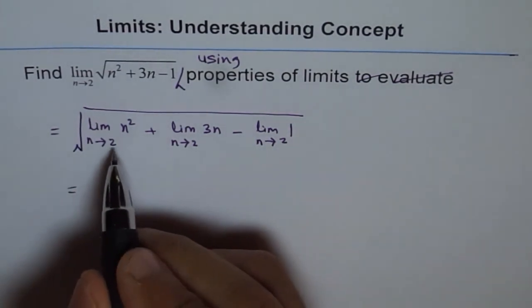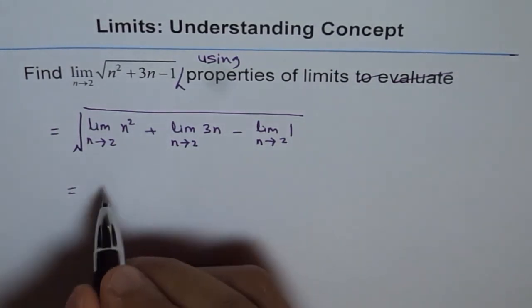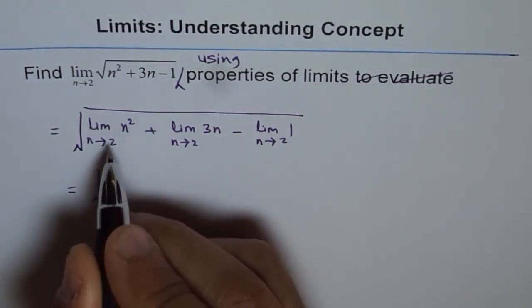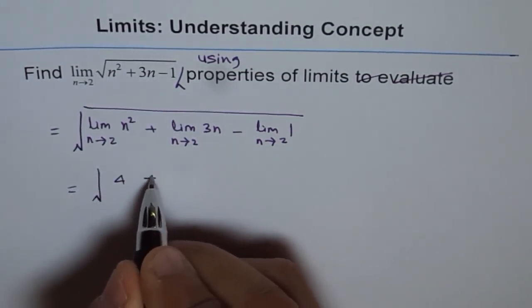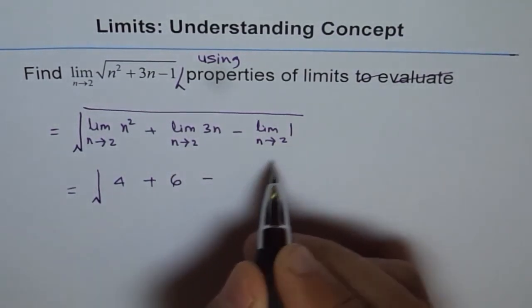So we can write this as: when you substitute 2 here, you get 2 squared, which is 4. So we can write this as 4 plus 2 times 3 - n is 2, 2 times 3 is 6 - minus 1.